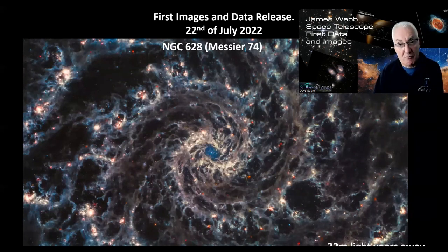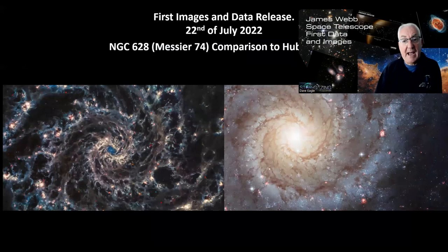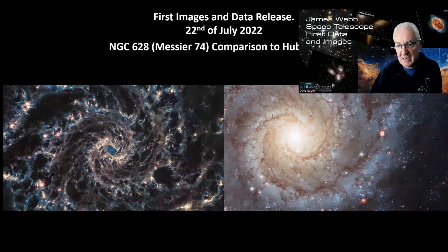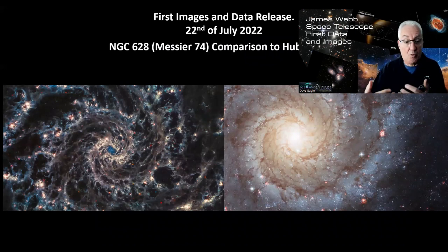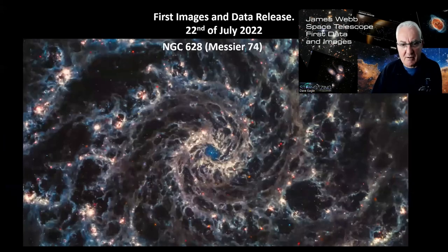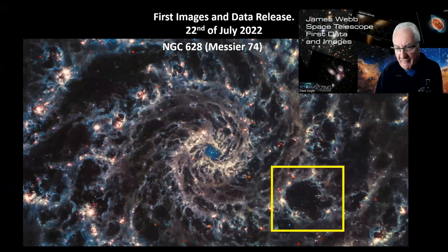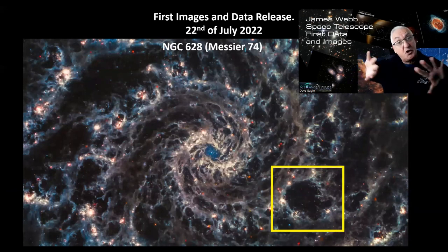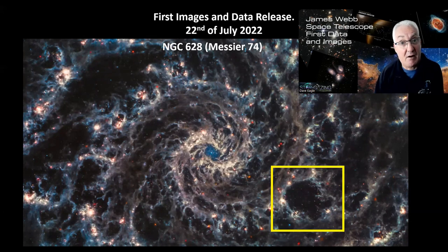Messier 74, also known as NGC 628, is a beautiful spiral galaxy 32 million light years away. With the infrared cameras we can see right into the galaxy through the dust lanes and see absolutely beautiful structure. Comparing that to the Hubble image on the right, you can see just how much more detail is visible - Webb's infrared camera can look through the gas and dust to see all those areas where infrared is coming through. One notable feature is a really dark area - a big bubble within the galaxy - possibly caused by supernova shock waves that have cleared that area of infrared-emitting material.